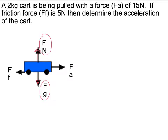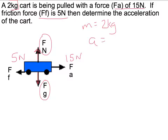Let's read what the problem is telling us about the force of friction and the applied force. A 2 kg cart is being pushed with an applied force of 15 newtons. If the friction force is 5 newtons, determine the acceleration of the cart. So let's fill in what we know — the mass is 2 kg. Now the forces I'm going to write on our free body diagram: the applied force is 15 newtons and the friction force is 5 newtons. We want to figure out the acceleration, and the units will be in meters per second squared.